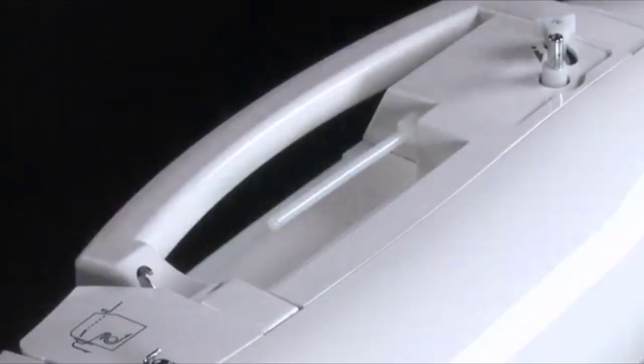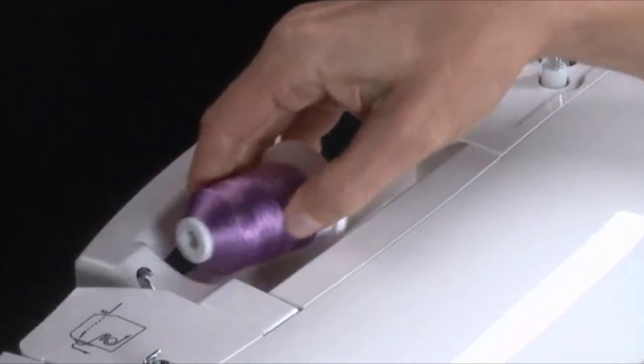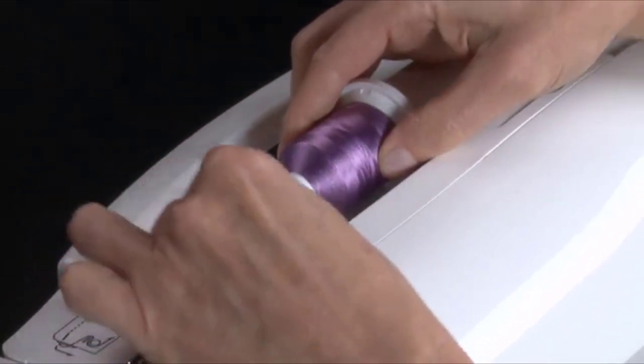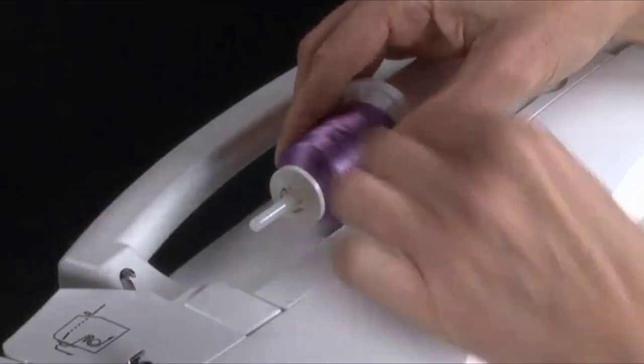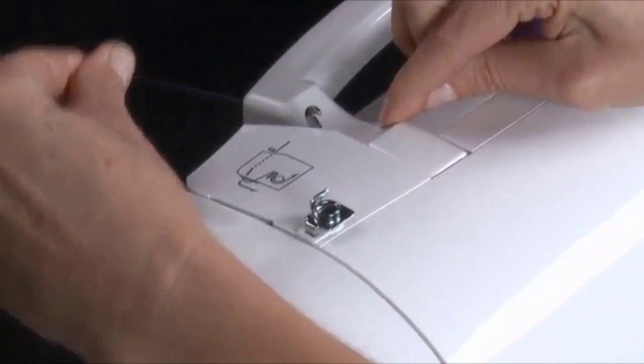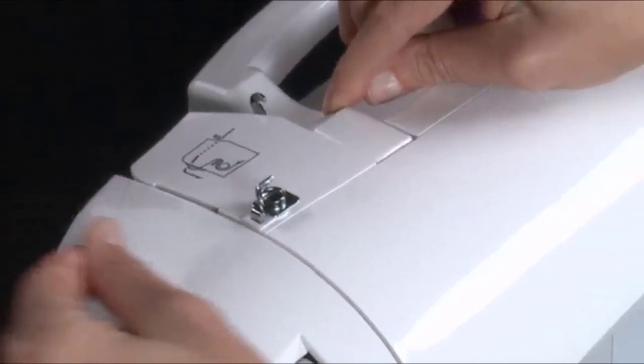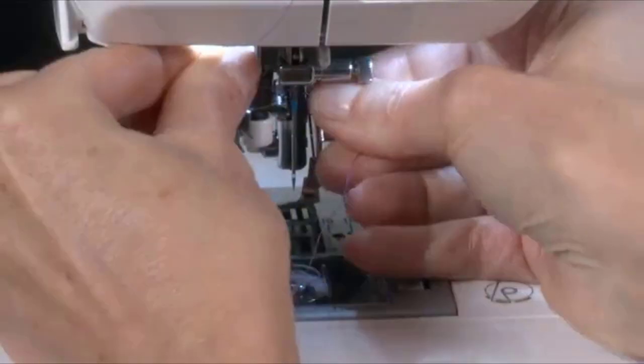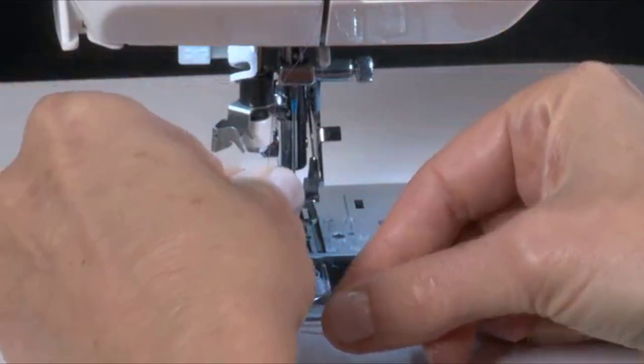Place the thread spool onto the spool pin and secure it with the appropriately sized spool cap. Bring the thread in front of this guide. Pull it into the guide at the top of the machine. Continue bringing the thread straight down the groove at the front of the machine, and then into the guide located just above the needle.